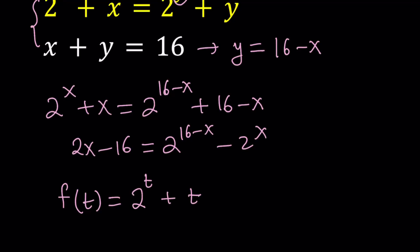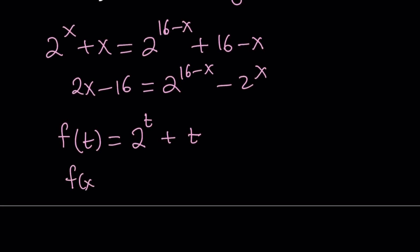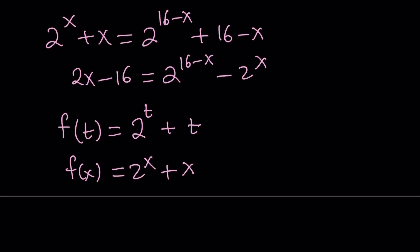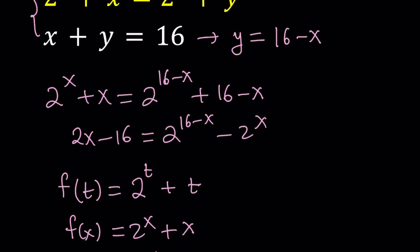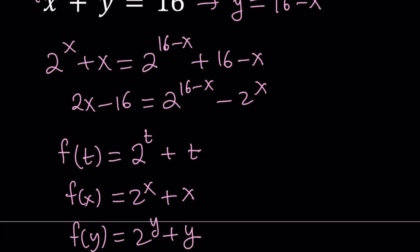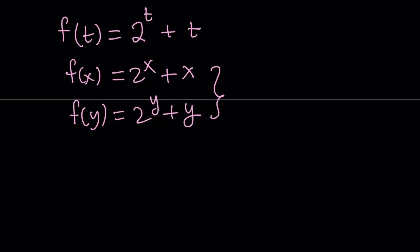Obviously, 2 to the power x plus x is just going to be f of x. That makes sense, right? Based on our definition, it's going to be f of x. And 2 to the power y plus y is just going to be f of y. Don't think of these as functions in general but specific points like fixed points, kind of like x sub 0 or something like that. So we have two points x comma f of x and y comma f of y. And we notice that these two values are the same. So we have the situation where f of y equals f of x.